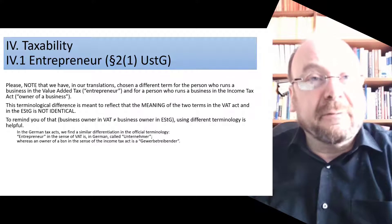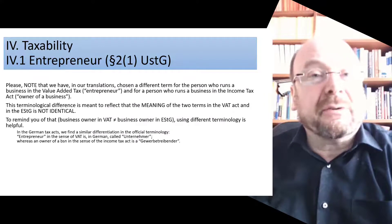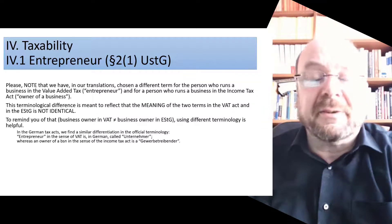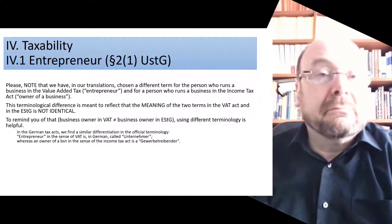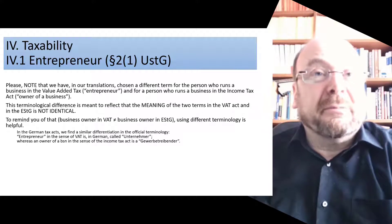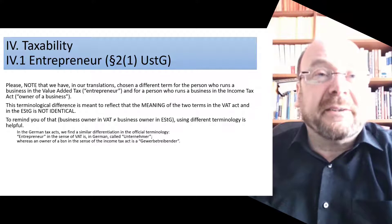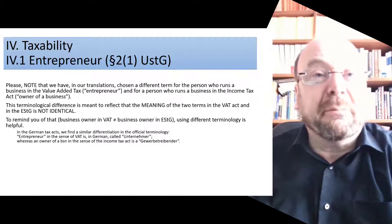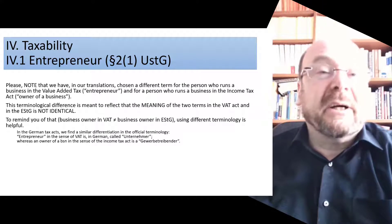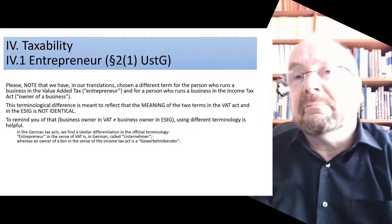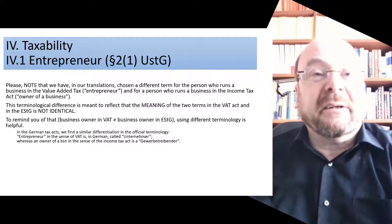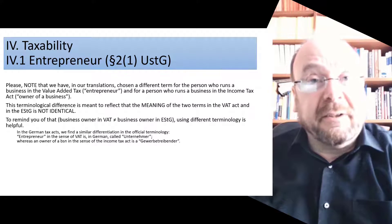In German, entrepreneur in the sense of VAT is called 'Unternehmer', whereas an owner of a business in the sense of the income tax act is called 'Gewerbetreibender'. If a German speaks of a 'Gewerbebetrieb', you know you are in a conversation about income or corporation tax. Whereas if somebody asks 'is that institution an Unternehmer?', you know immediately you are in a VAT conversation.